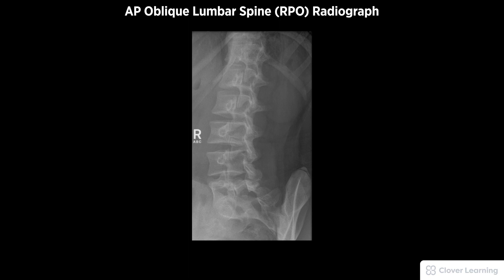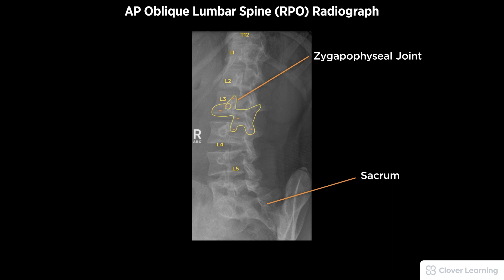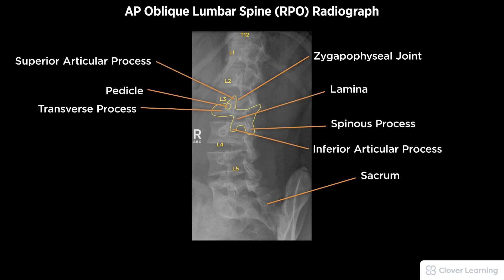Demonstrated anatomy to include T12, five lumbar vertebrae, and the sacrum, the zygapophyseal joints closest to the image receptor, the appearance of Scotty dogs, and proper visualization of soft tissue and bony detail.